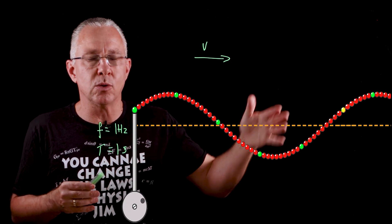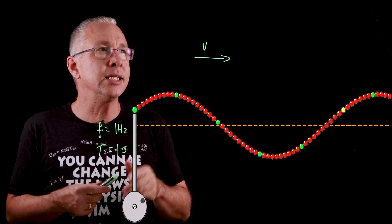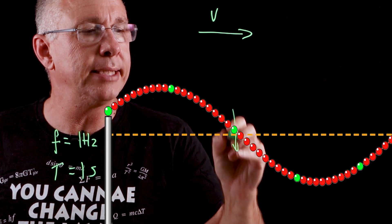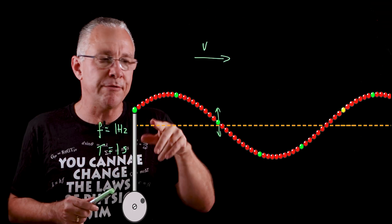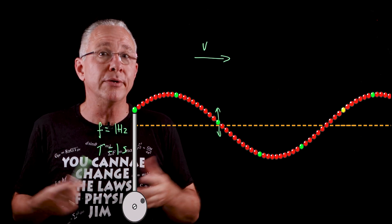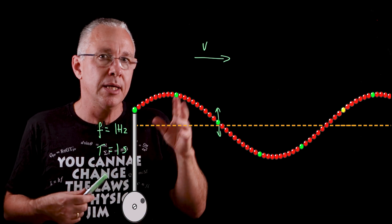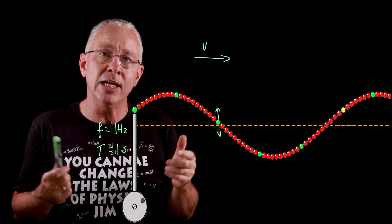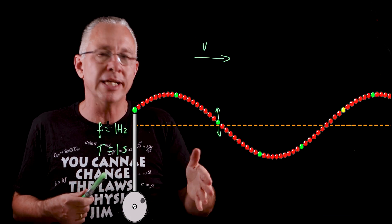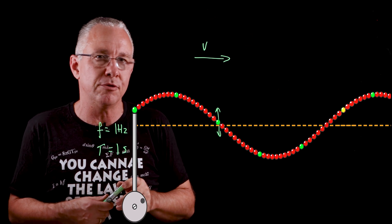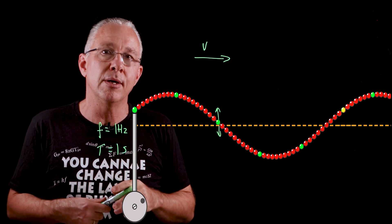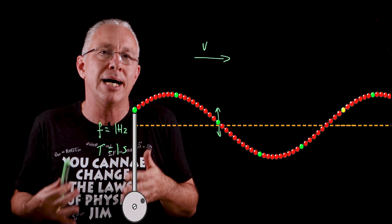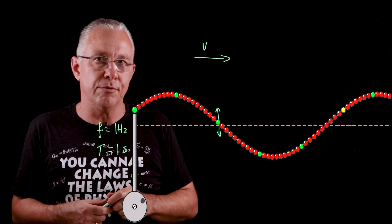Every single particle along the vibration is doing that cyclical or periodic pattern — hence we call it the period. The particles are vibrating up and down, but the wave is moving in the horizontal direction. As a result there is an angle difference between the direction of the particles and the direction of the wave itself. It's 90 degrees, and that is why we call it a transverse wave — because the particles are going transverse to the direction of the wave.